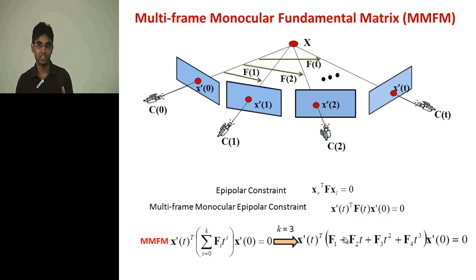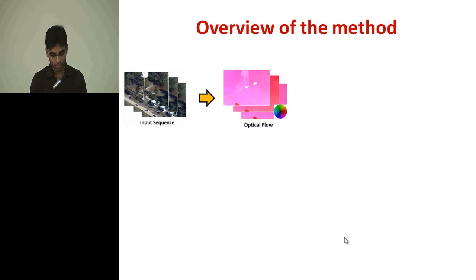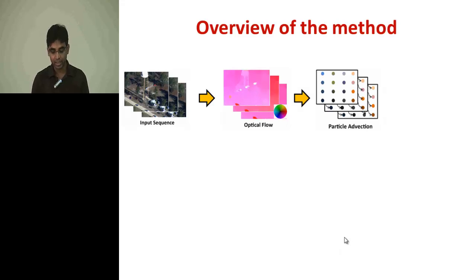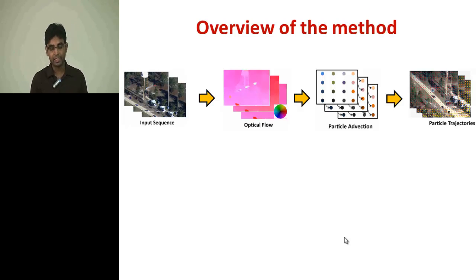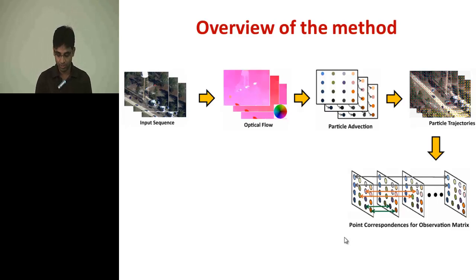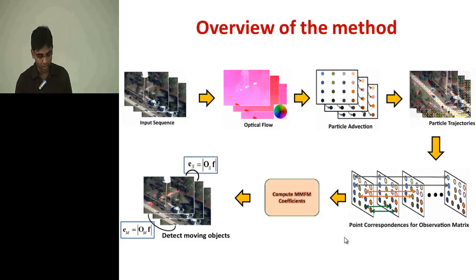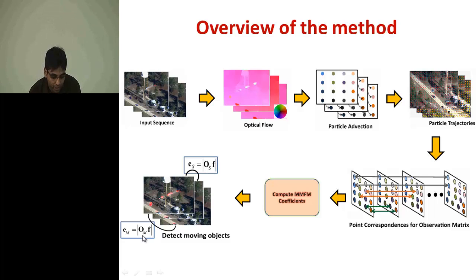The overview of our method is: given a sequence of frames, we calculate frame-to-frame optical flow and divide the frames into fixed-length frame sets. We perform particle tracking on each set, giving us dense trajectories of pixels. Using those trajectories, we establish point correspondences between any two frames within the frame set, producing the observation matrix. We use this observation matrix to find the MMFM coefficients, in the same way the eight-point algorithm does for the fundamental matrix. Once we know the coefficients, the error generated by static points is much lower than the error for moving points.